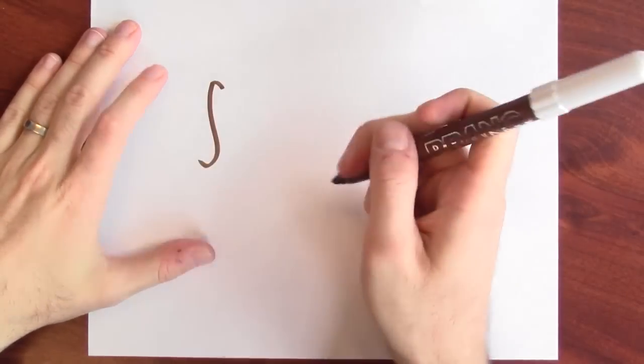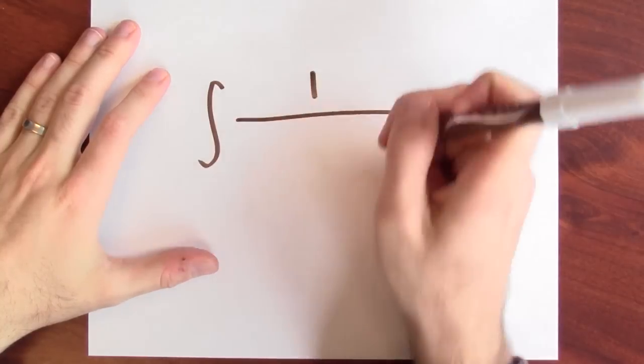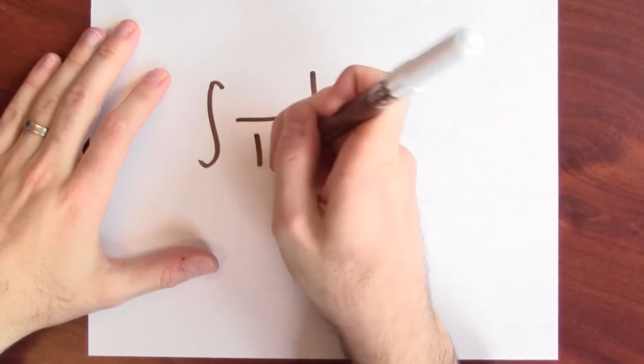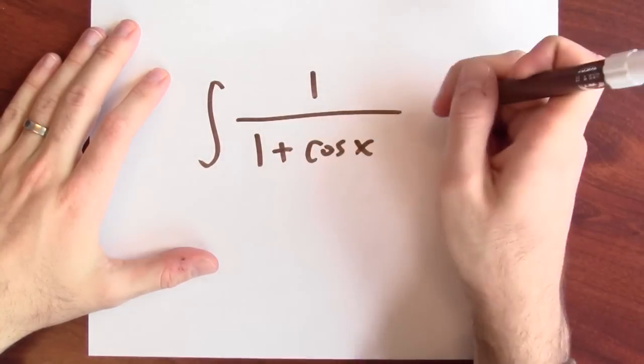Sometimes the best substitution to make isn't even visible until after we've messed around with the integrand somehow. For example, what's the anti-derivative of 1 over 1 plus cosine x dx? What can you do?